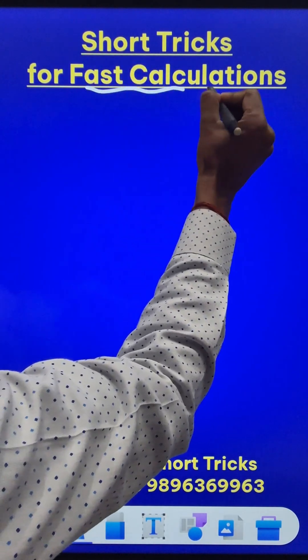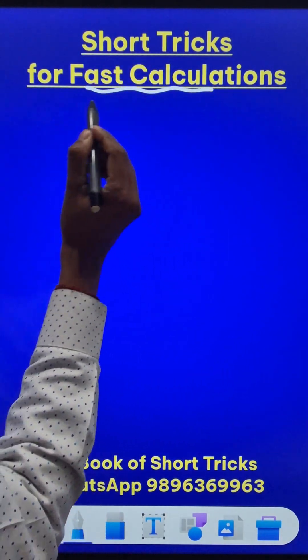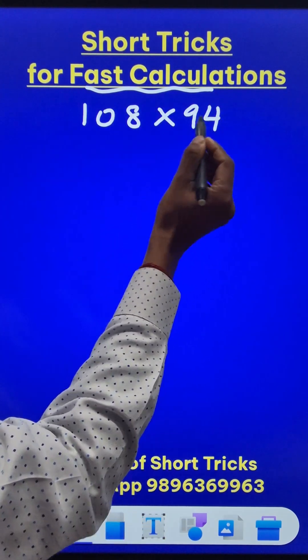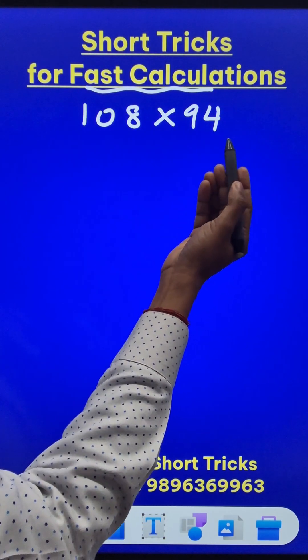Here is a fast calculation short trick for all maths lovers. Suppose you have to do 108 times 94. You can observe that both the numbers are very close to 100 which is a base number.